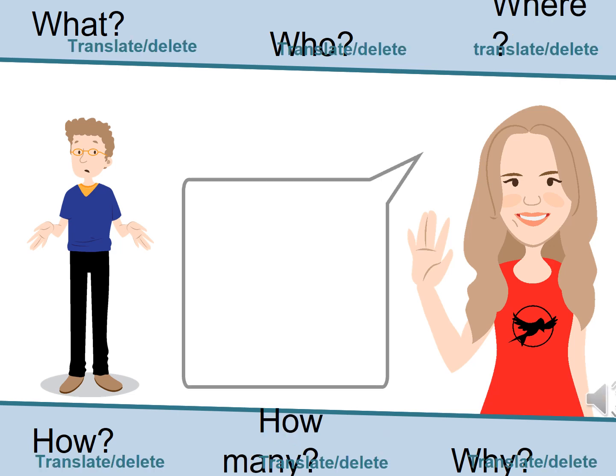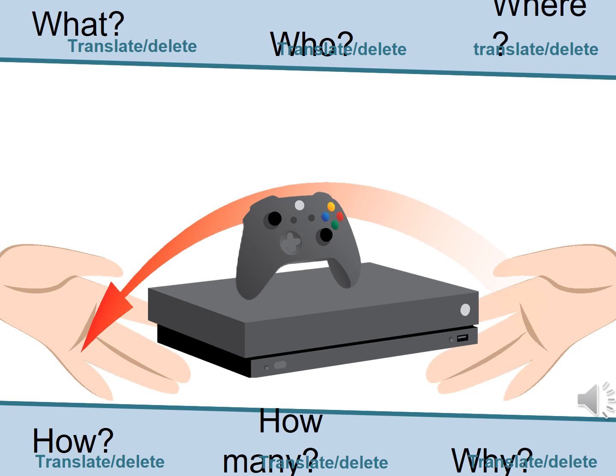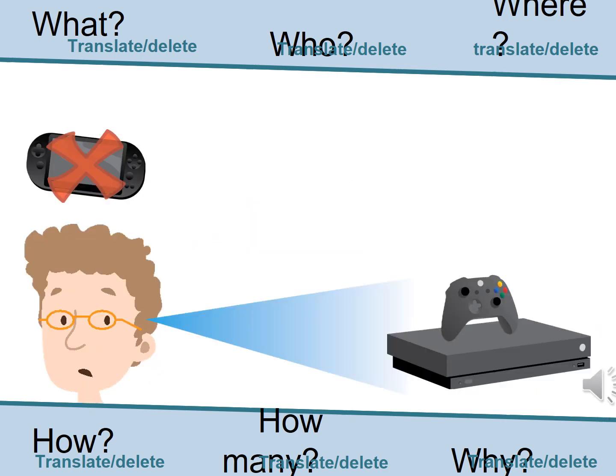Jennifer said, I have an Xbox, but I don't have a Playstation Vita. Jennifer gave the Xbox to Daniel. Daniel looked at the Xbox, but he wasn't happy because he didn't have a Playstation.